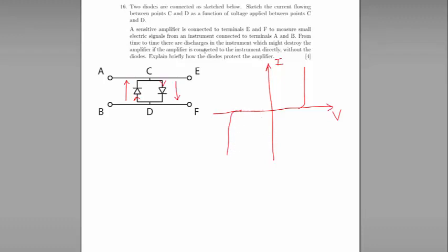The second part of the question says, a sensitive amplifier is connected to terminals E and F to measure small electric signals from an instrument connected to terminals A and B. From time to time, there are discharges in the instrument which might destroy the amplifier if connected directly without the diodes. Explain briefly how the diodes protect the amplifier.